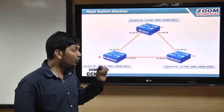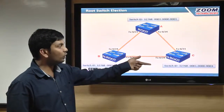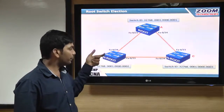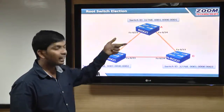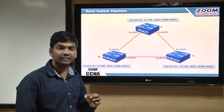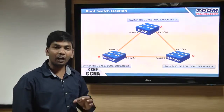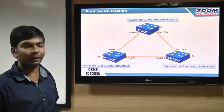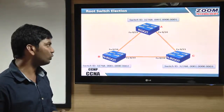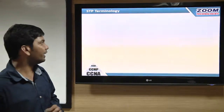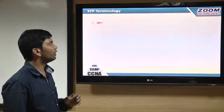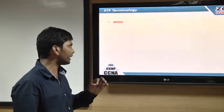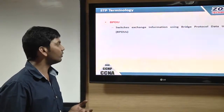How do the switches know each other? Switch C and B know that A has the least switch ID by exchanging a hello packet — here called BPDUs, Bridge Protocol Data Units — which are exchanged between the switches every two seconds to identify each other.